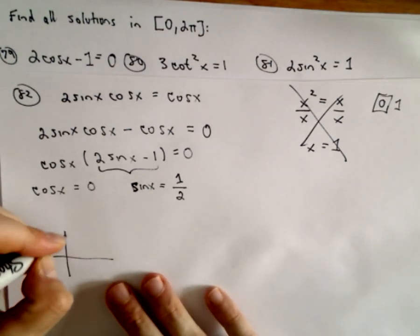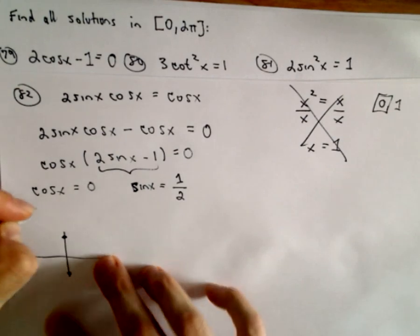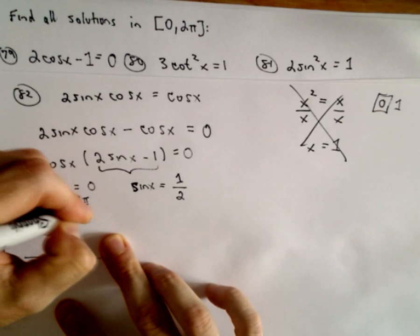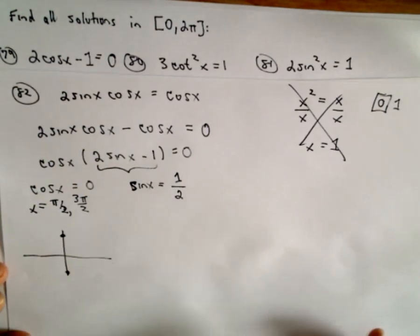Cosine, well, that's the x coordinate, so at pi over 2 and at 3 pi over 2, that's when cosine is going to equal 0.